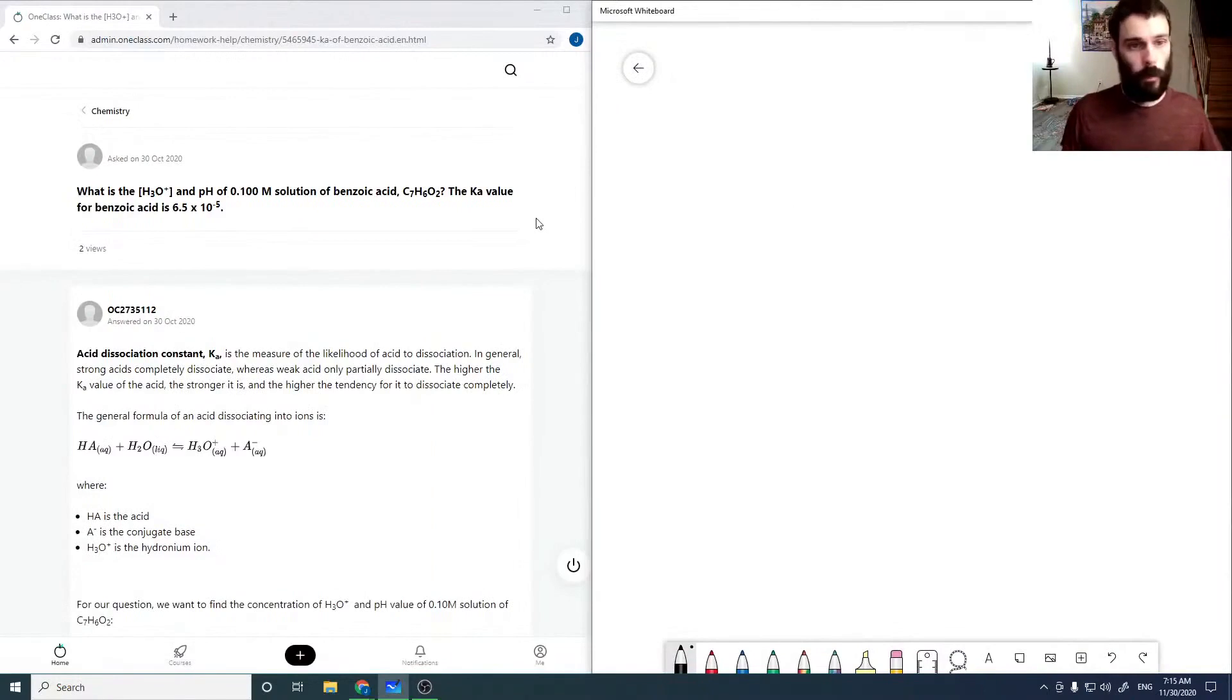What is the H3O plus concentration and pH of a 0.1 molar benzoic acid solution? So our equation here, our chemical reaction is going to be an acid-base, so it's going to be benzoic acid plus water and we're going to go to H3O plus C7H5O2 minus. So we're going to donate a hydrogen, so it should be H5O2 minus.